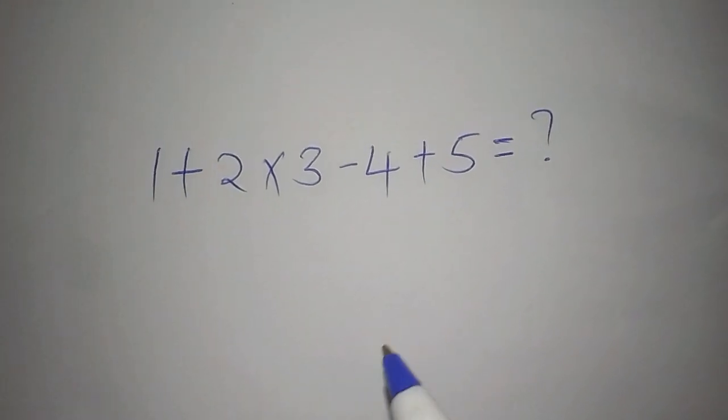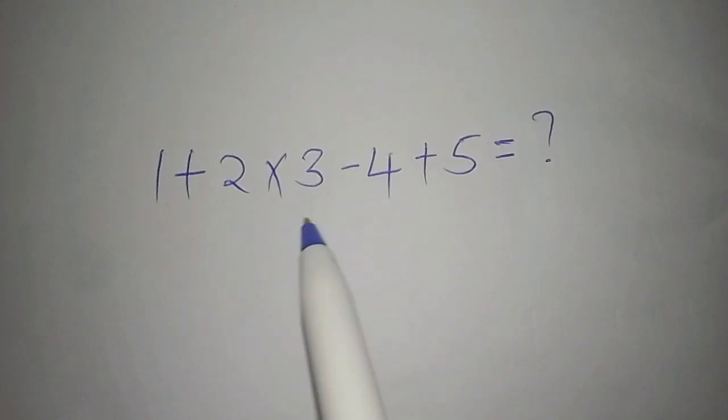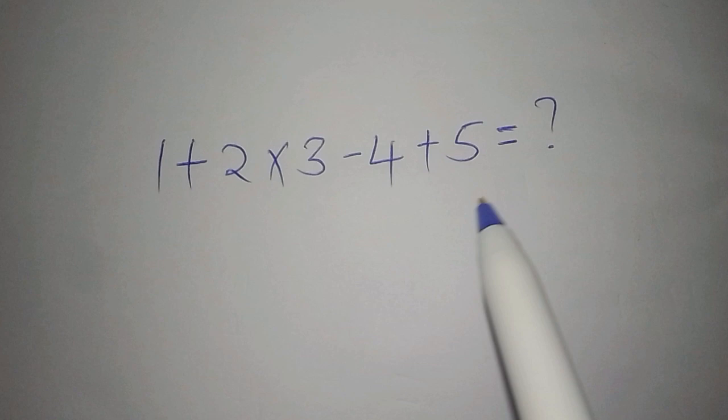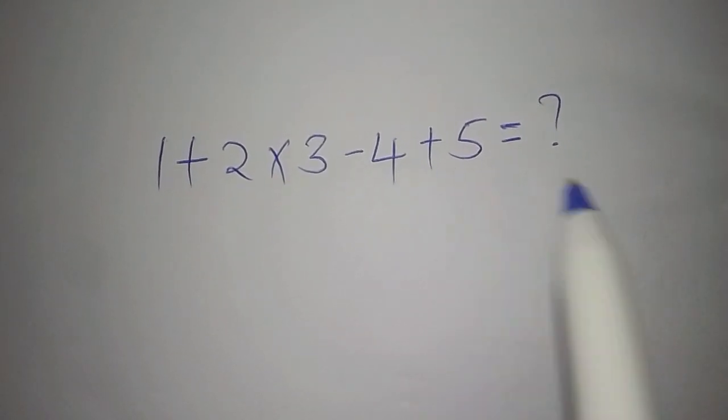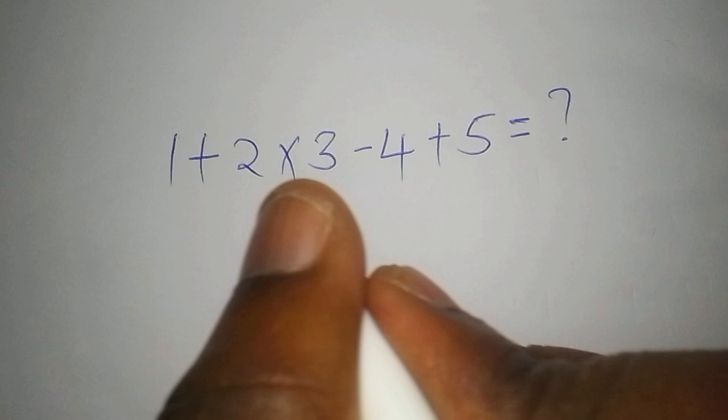Hello everyone, a lot of people got this math problem wrong so I want us to work it out. We have 1 + 2 × 3 - 4 + 5, so we're going to start with the solution.